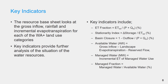The second key indicator is the stationarity index, given by the ratio of the change in storage to total evapotranspiration. The stationarity index is an indication of the depletion of water resources. Positive values indicate that water is being added to groundwater and/or surface water storage, while negative values indicate a depletion of storage.